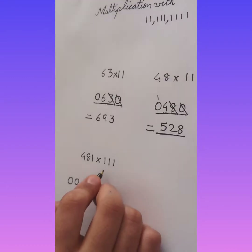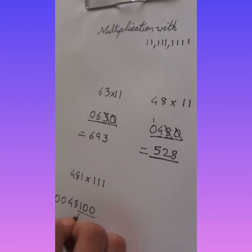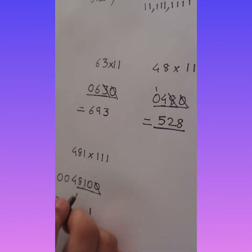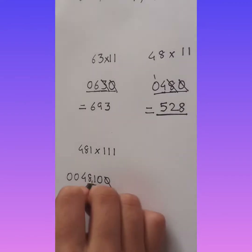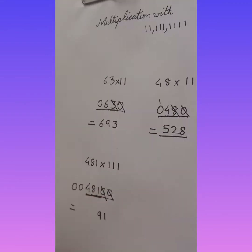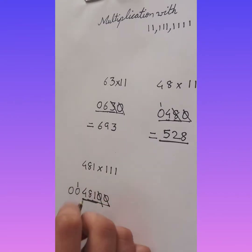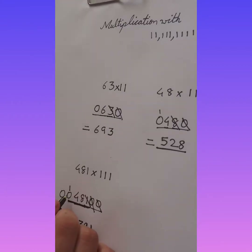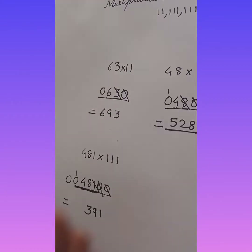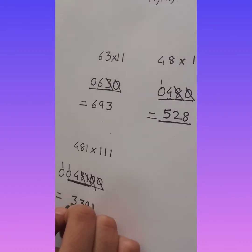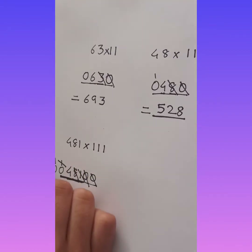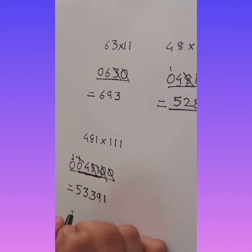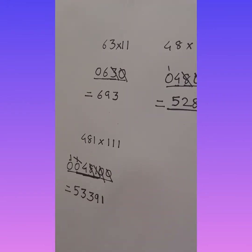Now the final answer. Here we have 3 digits so we take groups of 3. 1 plus 0 plus 0 is 1. Then 8 plus 1 plus 0 is 9. Then 8 plus 1 is 9, plus 4 is 13 — carry 1. Then 4 plus 1 carry is 5, plus 8 is 13 — carry 1 again. Then 4 plus 1 carry is 5. So the answer is 53,391.